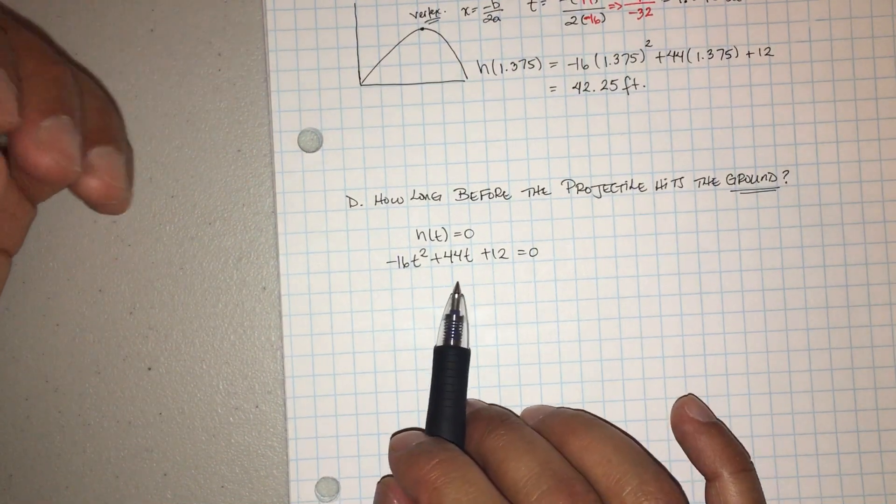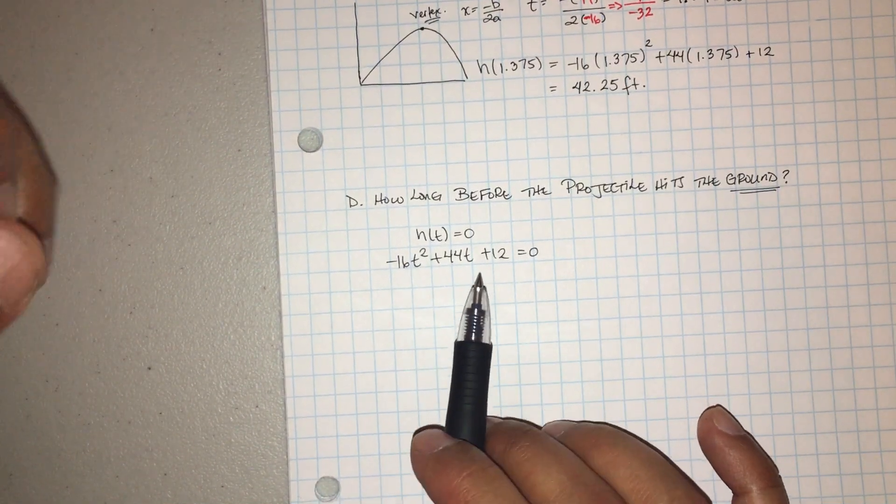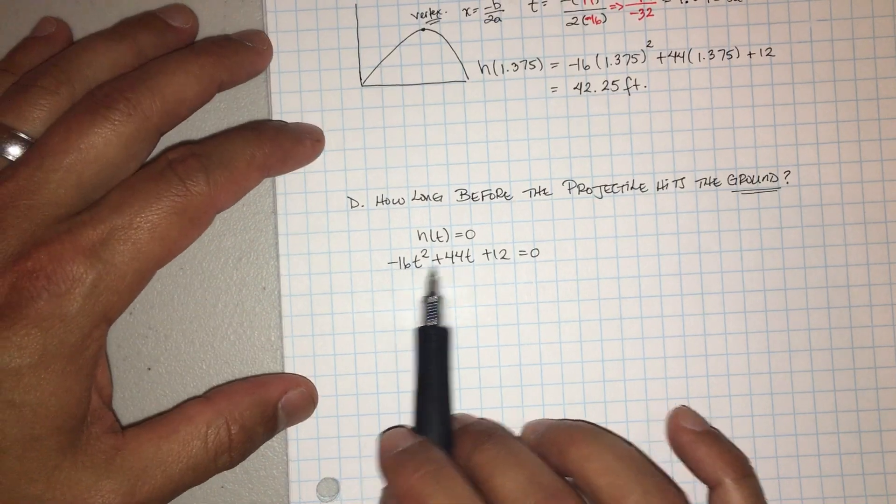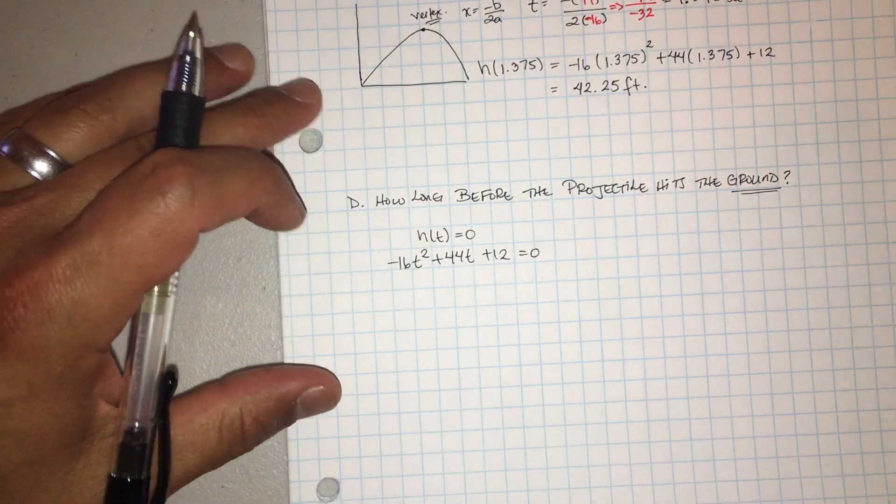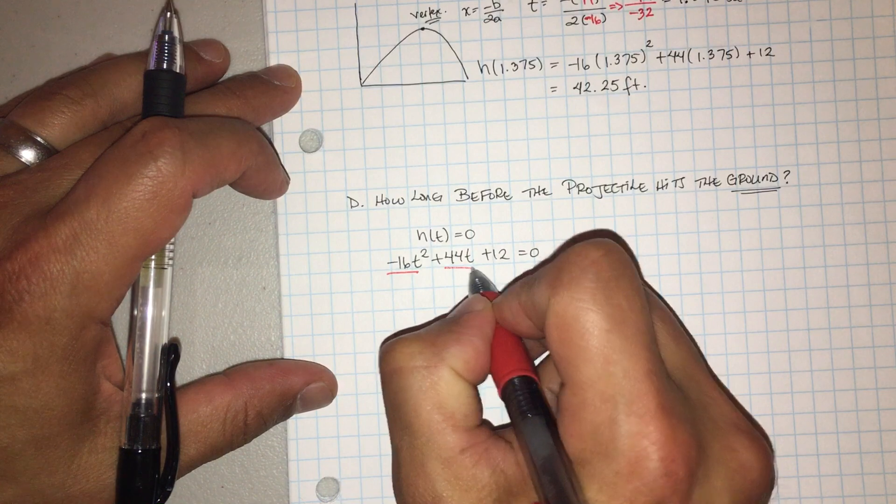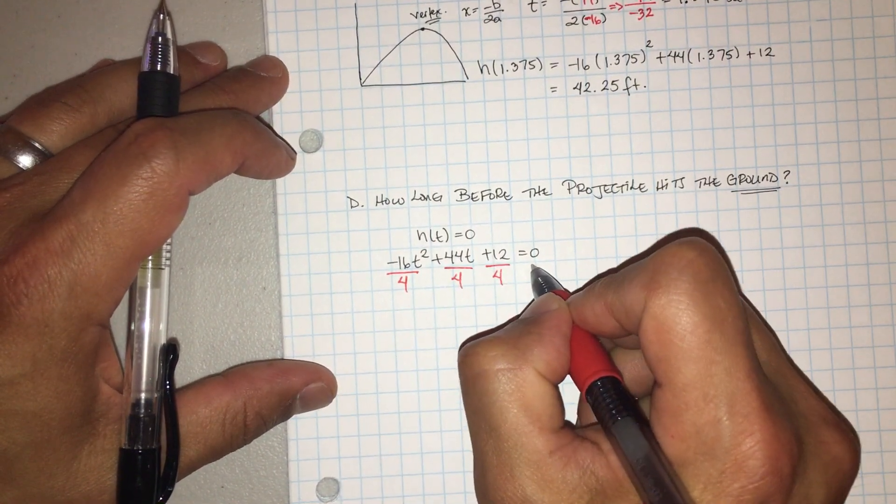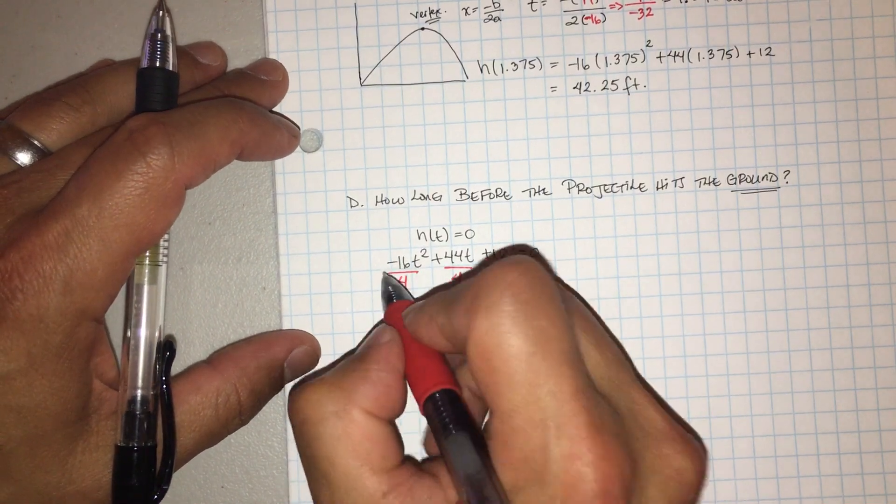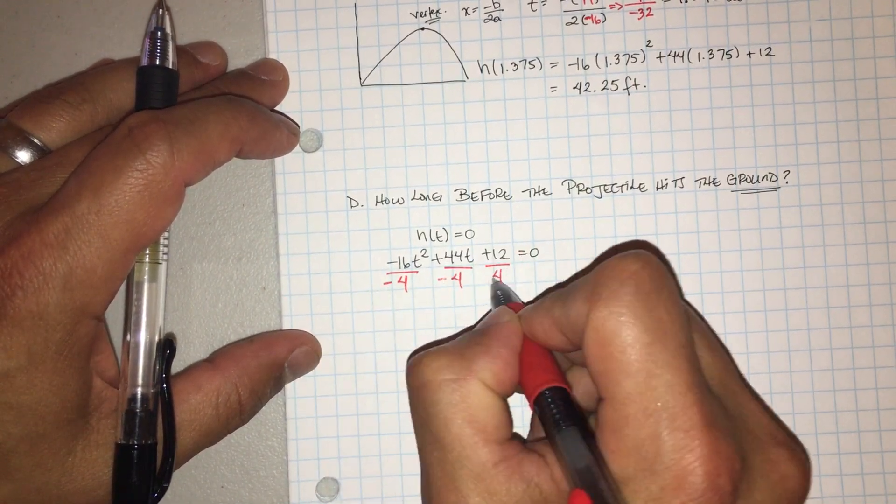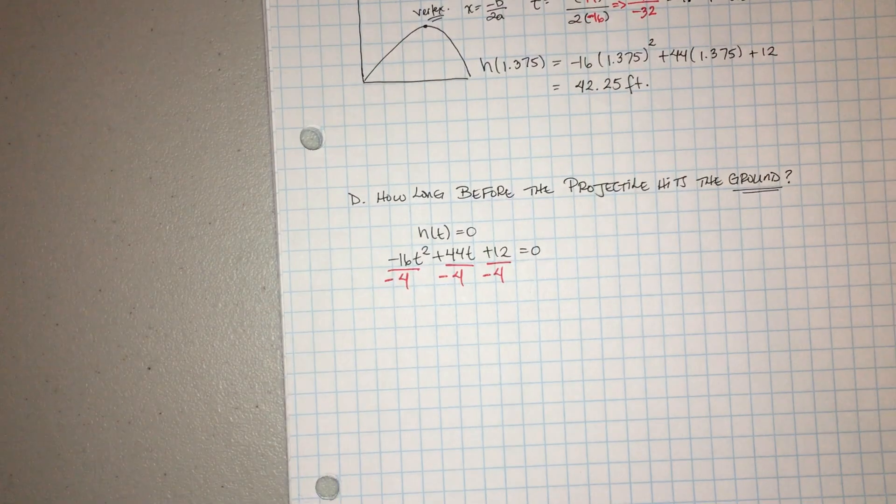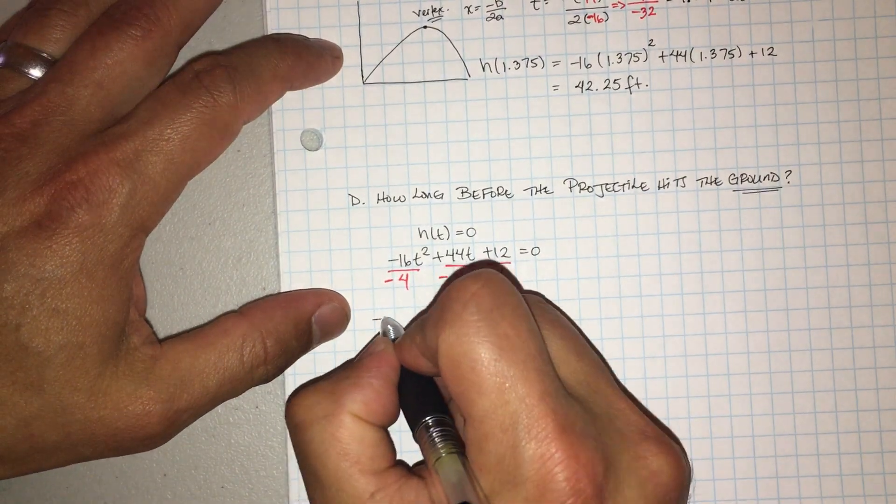Tengo que factorizarlo y resolverlo. Now remember the first rule in factoring, is there a common factor? Hay un factor en común? Claro que si, yes there is. What is that factor? Four. El cuatro le cabe a todos los tres. Entonces también le voy a quitar el negativo. I'm also going to go ahead and take out that negative, because I don't want to factor and I don't like factoring out with negatives. So I'm going to take out that negative.